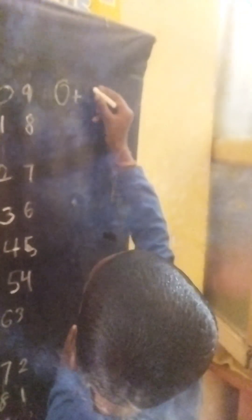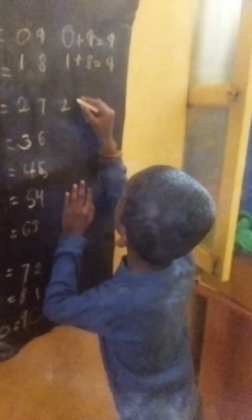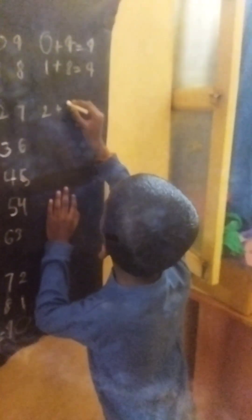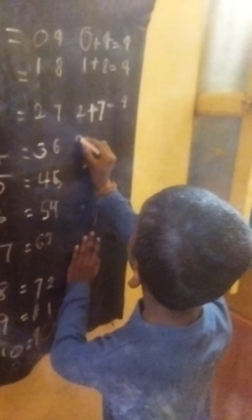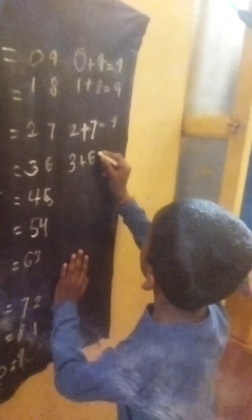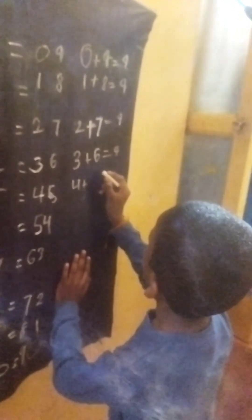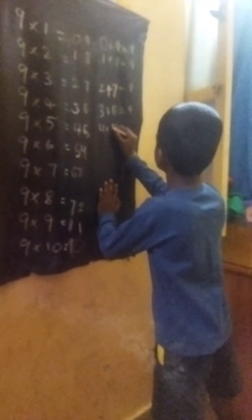Check and check. Show them. 0 plus 9 equals 9. 1 plus 8 equals 9. 2 plus 7 equals 9. 3 plus 6 equals 9. 4 plus 5, 5 equals 9.